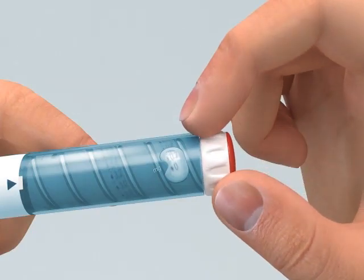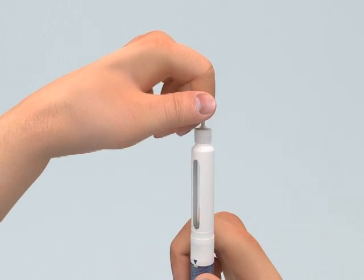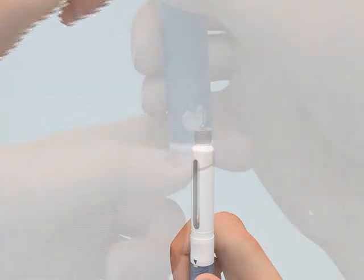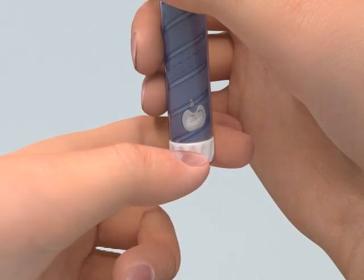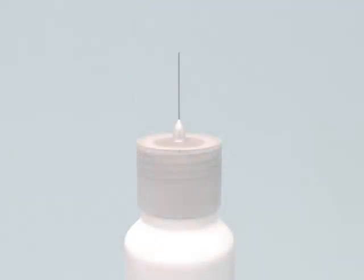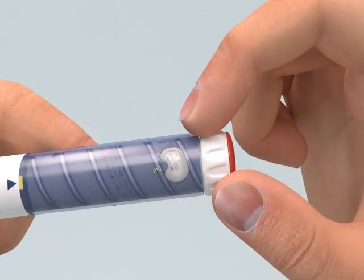Remove the inner pen needle shield. With the pen needle pointing up, firmly turn the dose knob back to the zero position and hold for at least five seconds. At least two drops of medicine must flow out of the pen needle for the pen to be properly primed. If at least two drops do not flow out, set your dose again and repeat the steps until at least two drops of medicine appear at the tip of the needle.